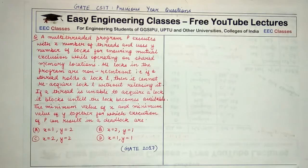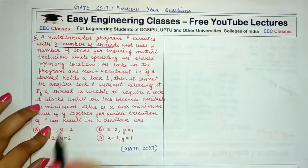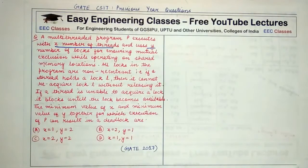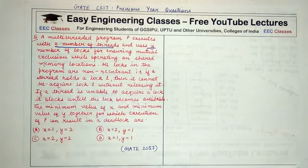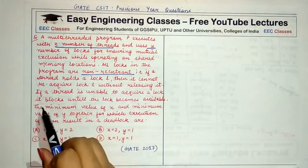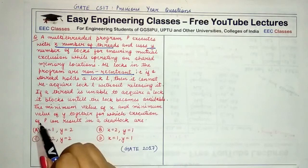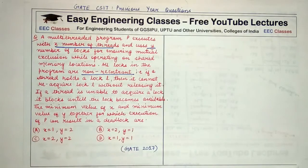The next question: a multi-threaded program P executes with X number of threads and uses Y number of locks for ensuring mutual exclusion while operating on shared memory locations. All locks in the program are non-reentrant — if a thread holds a lock L, it cannot re-acquire lock L without releasing it. If a thread is unable to acquire a lock, it blocks until the lock becomes available. The minimum values of X and Y together for which execution of P can result in a deadlock are to be found.